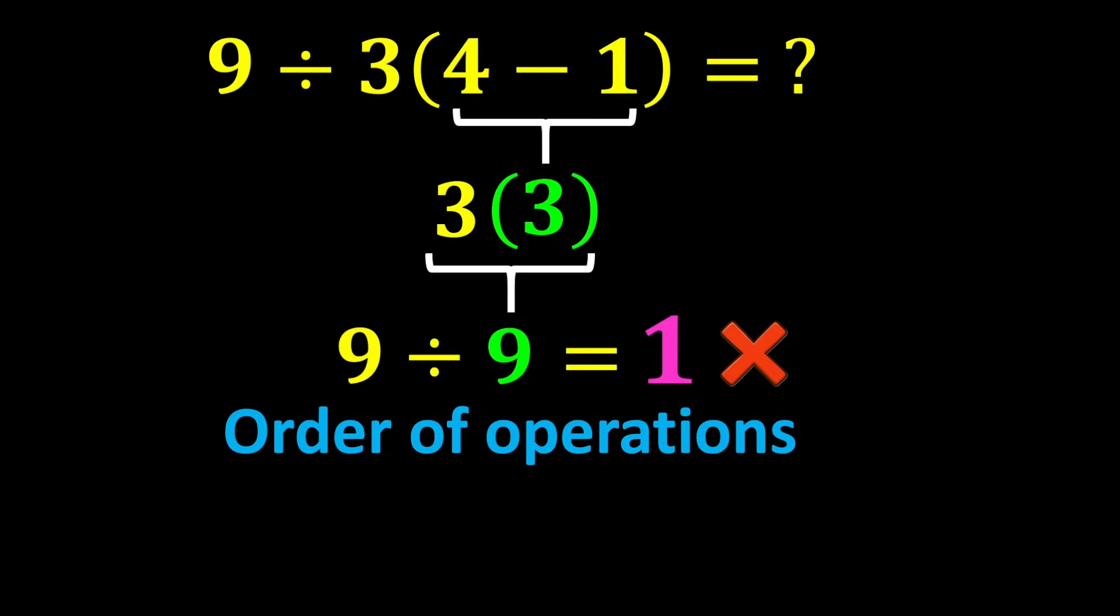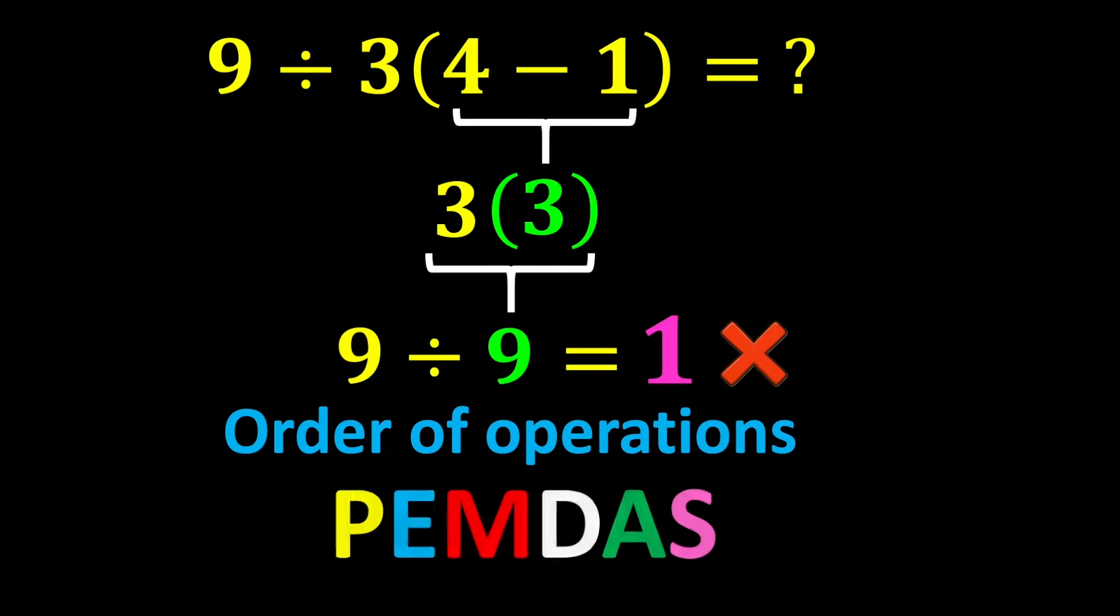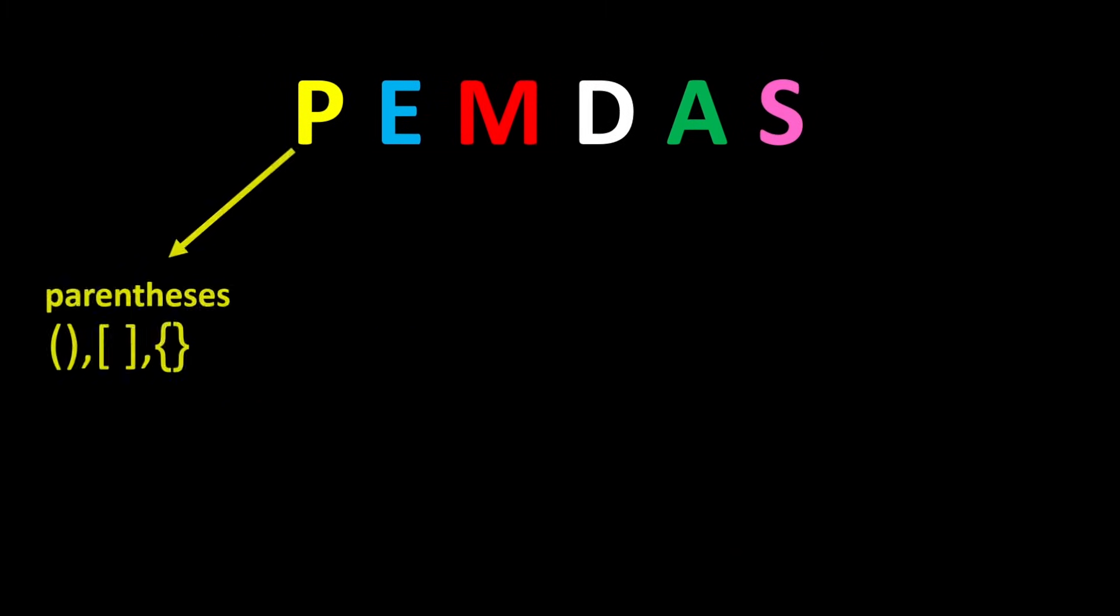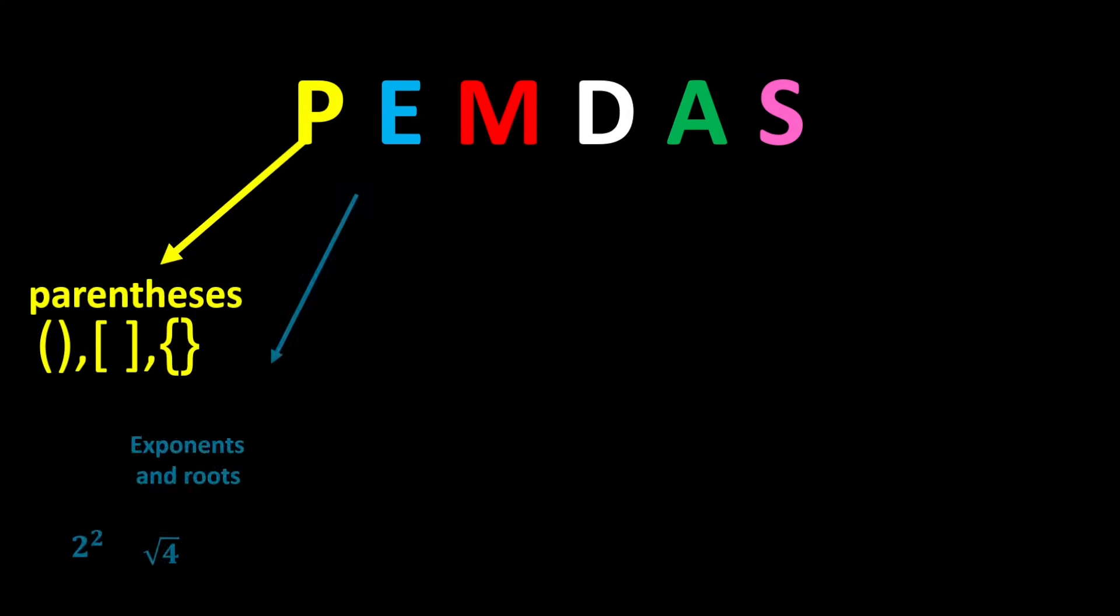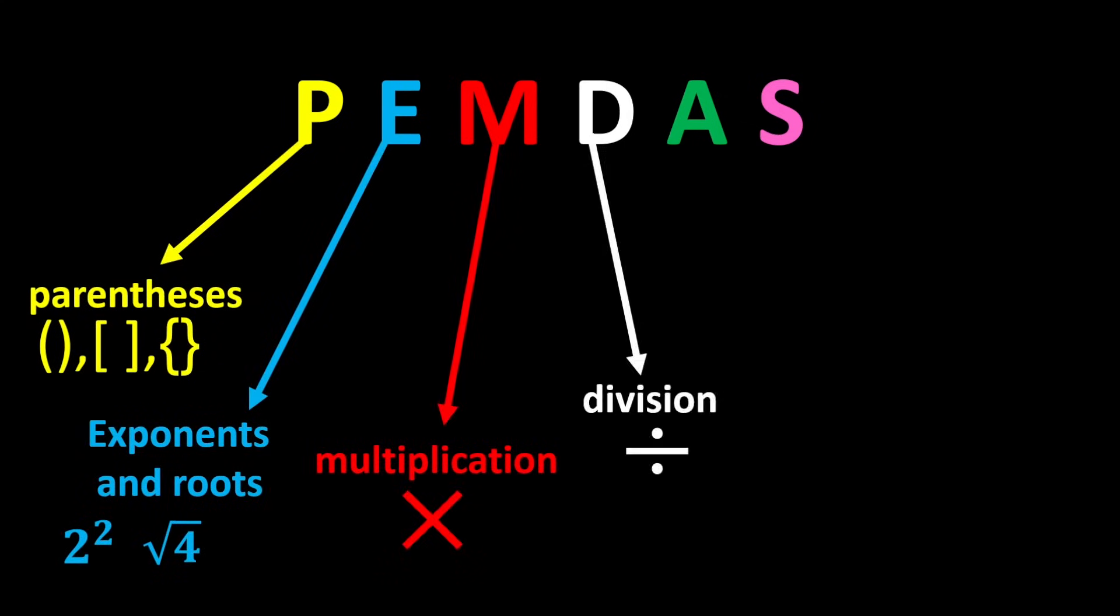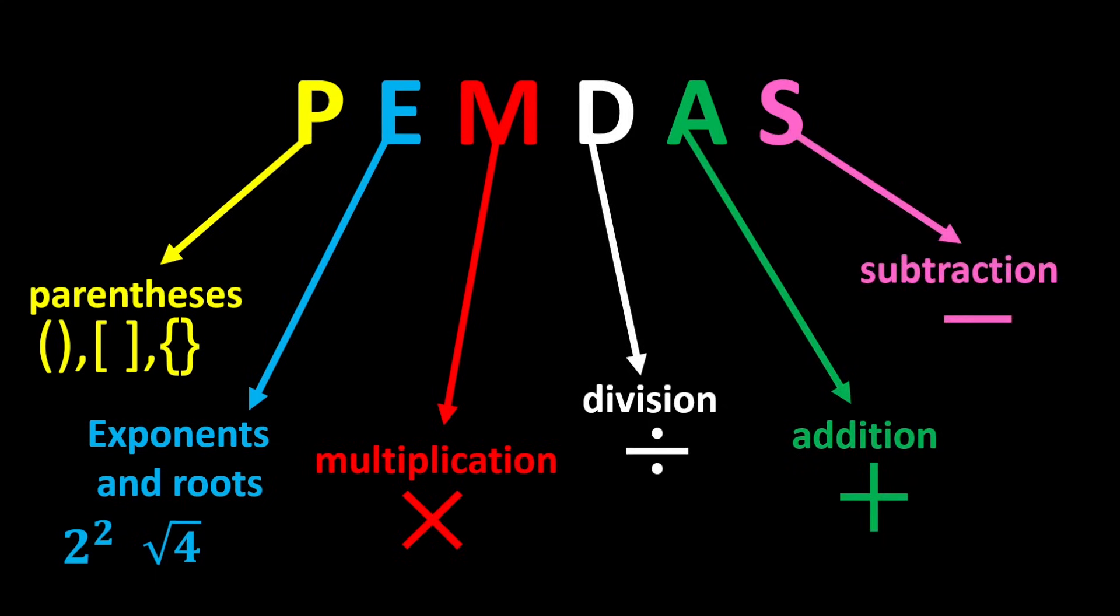The correct order of operations is known by a short acronym called PEMDAS. P stands for parentheses, E stands for exponents and roots, M stands for multiplication, D stands for division, A stands for addition, and S stands for subtraction.